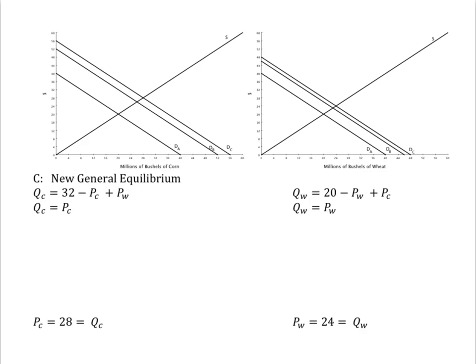If you got that the price and quantity of corn is 28 and the price and quantity of wheat is 24 in general equilibrium, then you can just end the video now. Here's my solution, again using the elimination method to solve the system of simultaneous equations.